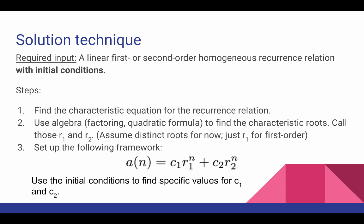Finally, we're going to do the following. We're going to set up the following framework for our closed formula solution. a(n) = c1*r1^n + c2*r2^n, where r1 and r2 were the characteristic roots we found in step two.